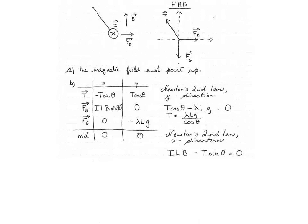Newton's second law in the x direction is ILB minus T sine theta is equal to zero. We are going to replace the T and we get ILB minus lambda Lg over cosine theta multiplied by sine theta. Now we can simplify this a little bit by replacing sine over cosine by a tangent.